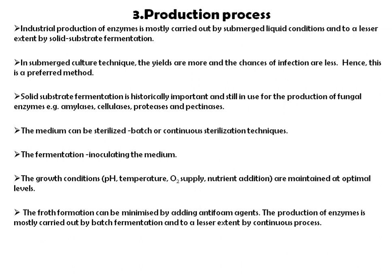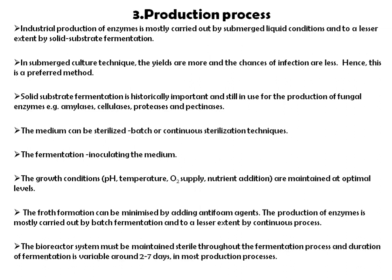After completion of the batch, isolation and purification begin. In continuous process, nutrients may be added and the product or enzyme removed during fermentation — that is why it is known as a continuous process. The bioreactor system must be maintained sterile throughout, and the duration of fermentation is variable, around 2 to 7 days in most production processes.